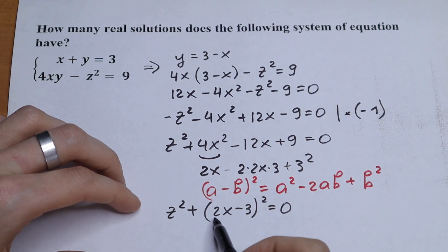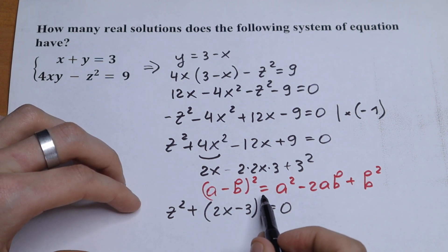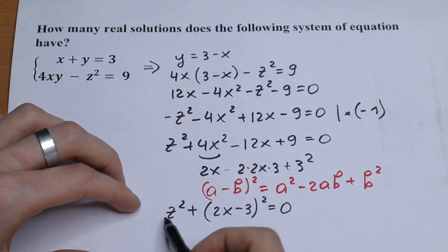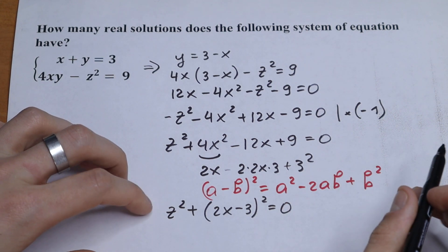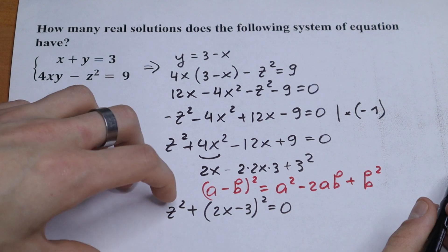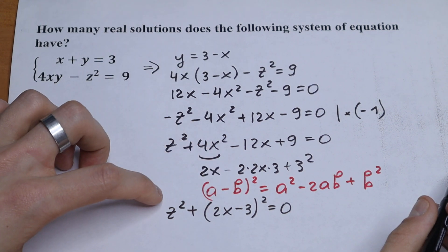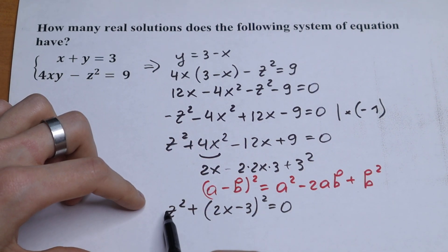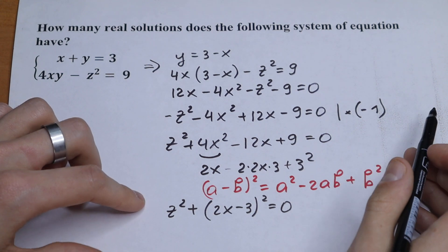And one and only case that this equation works is when this is equal to 0 and this. Because for example right here we have negative number. If we raise to the second power we have positive not equal to 0. And right here positive or negative doesn't matter. If we raise we will have positive number. So one and only case that this equation is correct is when this one equal to 0 and this.